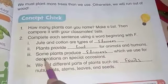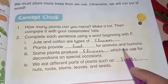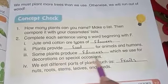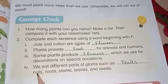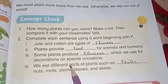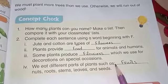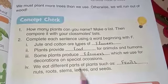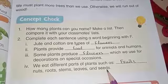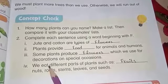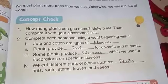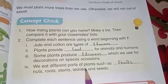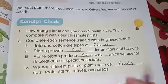Number 3: Some plants produce — which we use for decorations on special occasions — answer is 'flowers'. Some plants produce flowers which we use for decorations on special occasions. Number 4: We eat different parts of plants such as — nuts, roots, stems, leaves and seeds — answer is 'fruits'. We eat different parts of plants such as fruits, nuts, roots, stems, leaves and seeds.